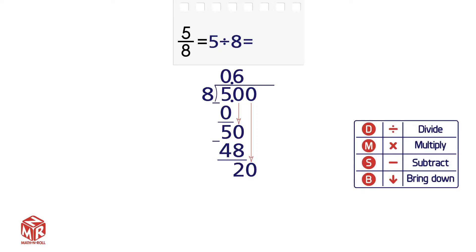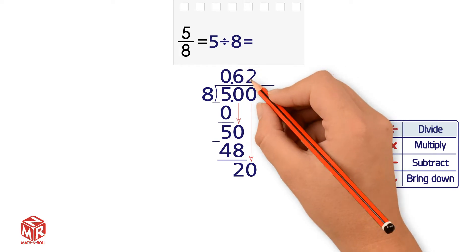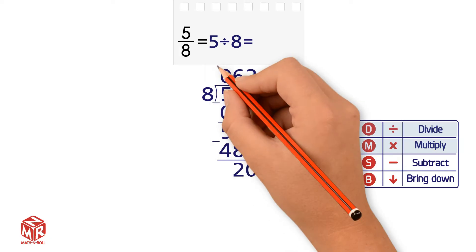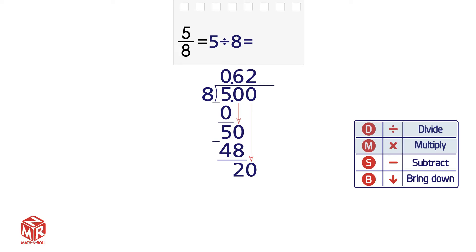Repeat the cycle. Step 1 is divide. How many 8's go into 20? 2. So we write the 2 above the 0. Step 2: Multiply. 8 times 2 equals 16, so we write the 16 below the 20. Step 3: Subtract. 20 minus 16 equals 4. Step 4: Bring down. We have nothing to bring down, so we expand the problem again by adding a 0. Now we bring down the 0. We have 40.